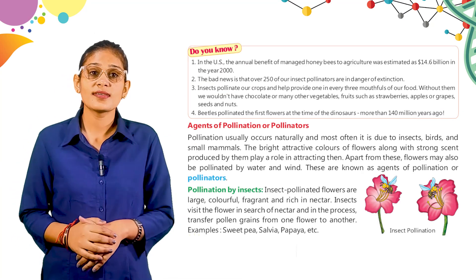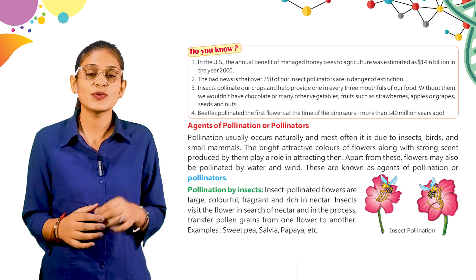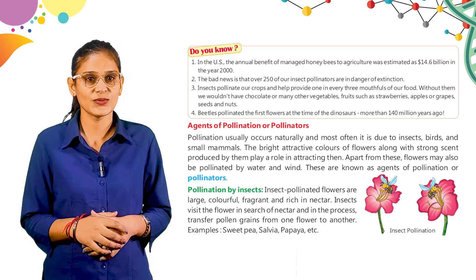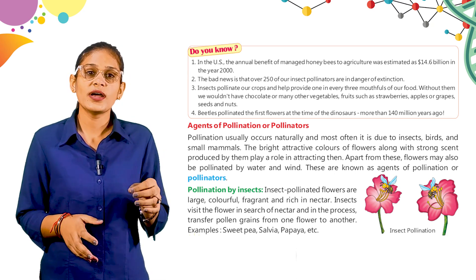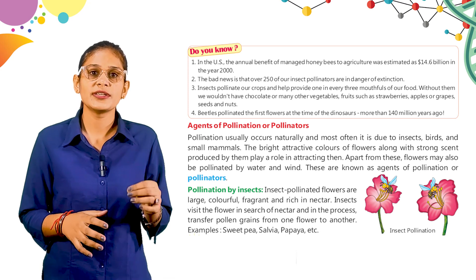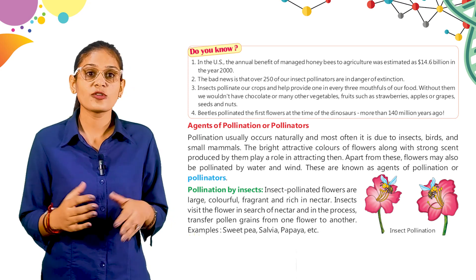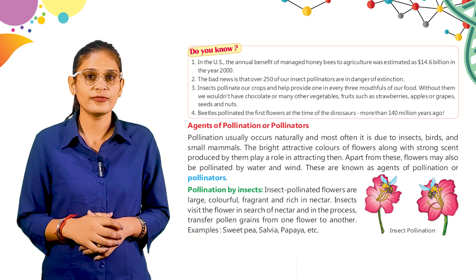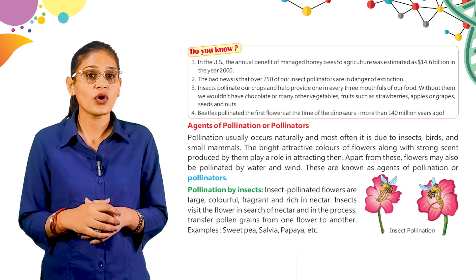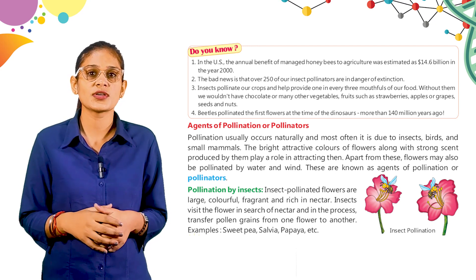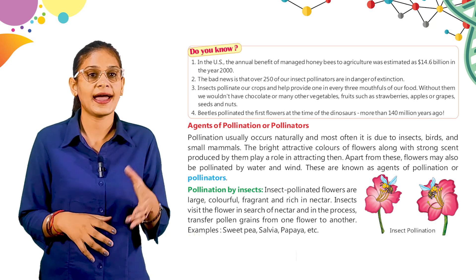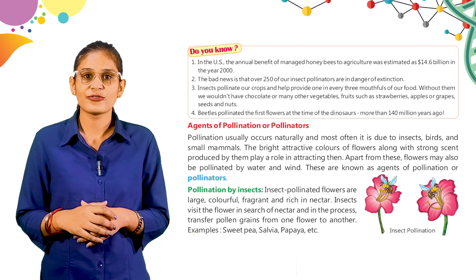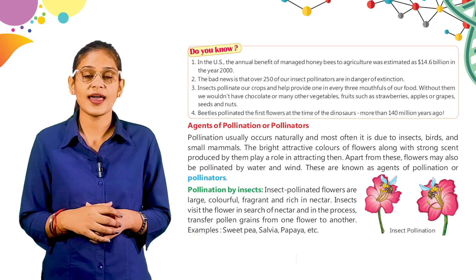Do you know? In the US, the annual benefit of managed honeybees to agriculture was estimated at $14.6 billion in the year 2000. The bad news is that over 250 of our insect pollinators are in danger of extinction. Insects pollinate our crops and help provide one in every three mouthfuls of our food. Without them, we would not have chocolate or many other vegetables and fruits such as strawberries, apples, grapes, seeds, and nuts. Beetles pollinated the first flower at the time of the dinosaurs, more than 140 million years ago.